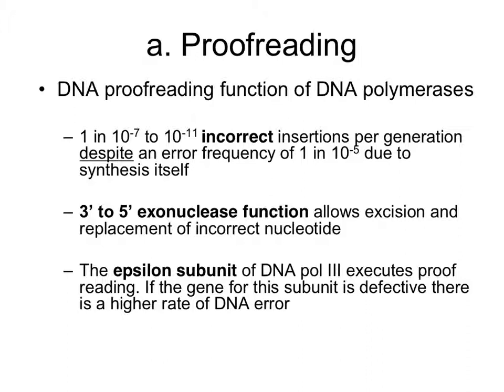That proofreading results from 3' to 5' exonuclease function. Exonuclease activity removes DNA from the ends of an area, allowing excision of incorrect nucleotides and replacement with correct ones. It is the epsilon subunit of DNA polymerase III in E. coli that executes proofreading. If there's an error in that gene resulting in a poorly functioning epsilon subunit, you see a much higher rate of DNA error.